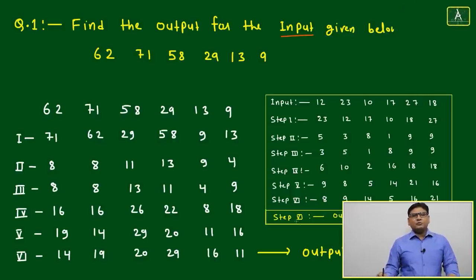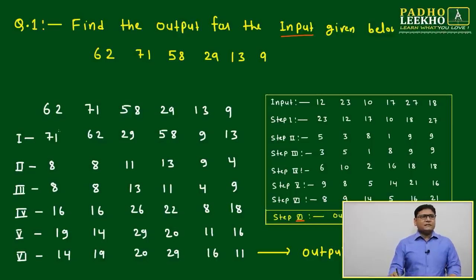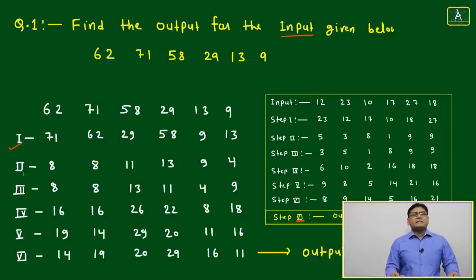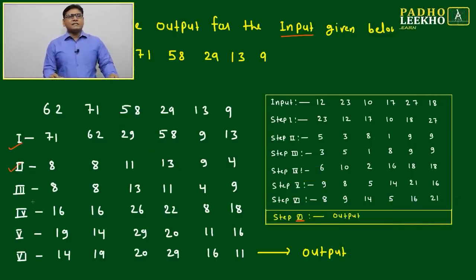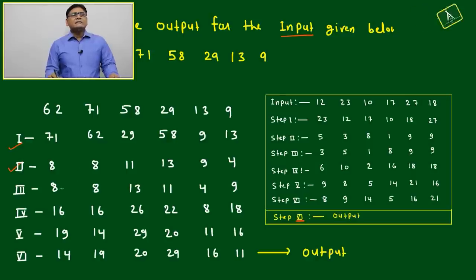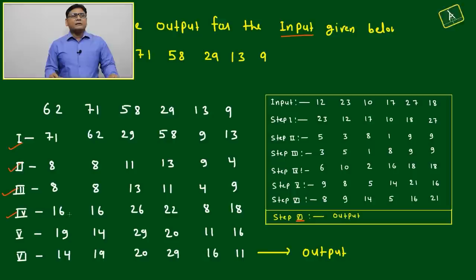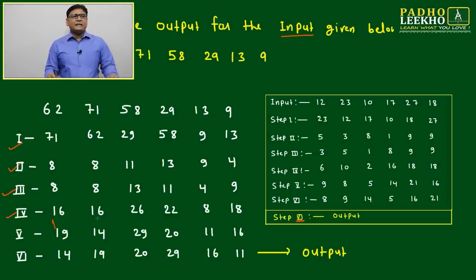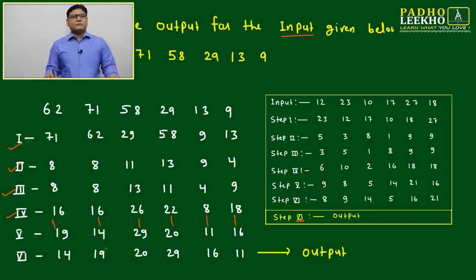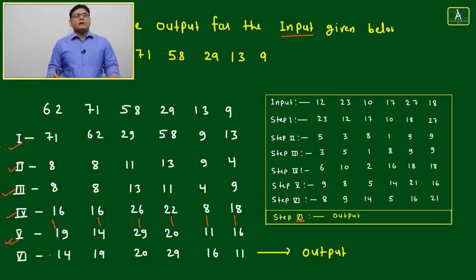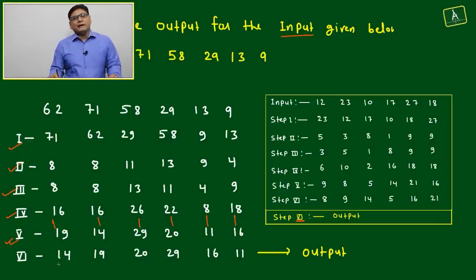We apply all 6 steps: Step 1 is interchanging, Step 2 is sum of digits, Step 3 is interchanging again, Step 4 is making it double, Step 5 is increasing by +3 and decreasing by -2 alternately, and Step 6 is final interchanging. The final output is 14, 19, 20, 29, 16, and 11.